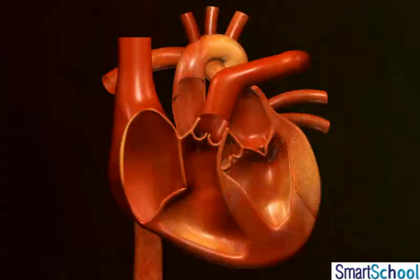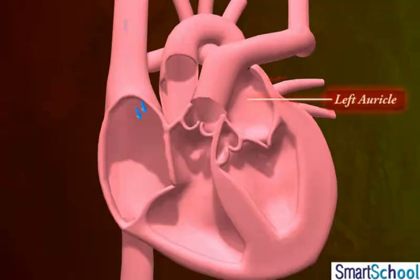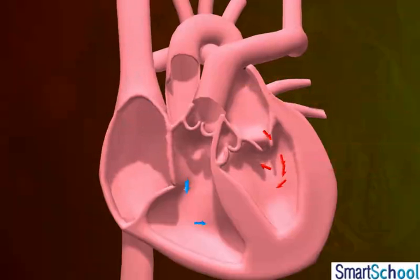Let us now understand how the heart functions to purify the blood. The oxygen-rich blood from the lungs comes to the thin-walled upper chamber of the heart, the left auricle. It should be well remembered that the auricle is in a relaxed state while collecting the blood. Afterwards, it contracts and the left ventricle expands so that the blood is transferred to it.